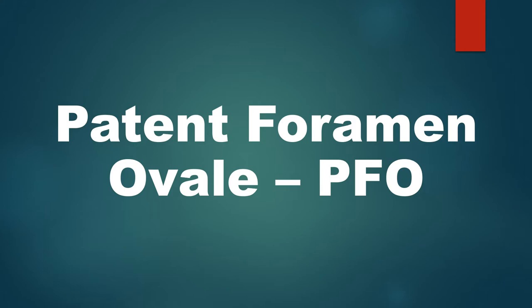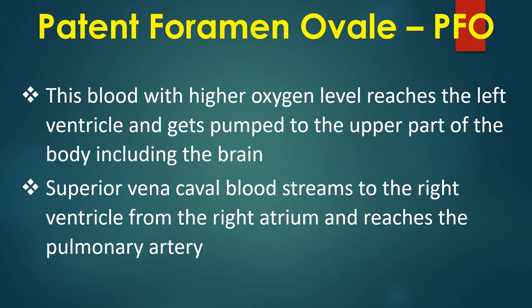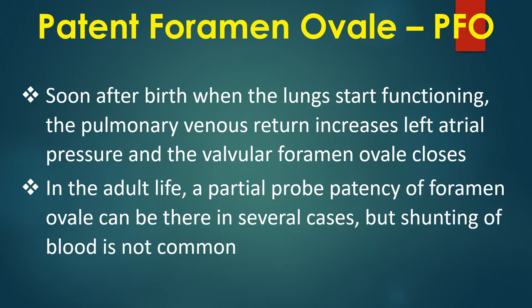Patent foramen ovale (PFO) is a valvular opening in the fossa ovalis region of the inter-atrial septum. In fetal life, the foramen ovale shunts relatively more saturated inferior vena caval blood — coming from the umbilical vein — from the right atrium to the left atrium. This blood with higher oxygen level reaches the left ventricle and is pumped to the upper part of the body including the brain. Superior vena caval blood streams to the right ventricle and reaches the pulmonary artery. As the lungs are non-functional, blood from the pulmonary artery is shunted to the descending thoracic aorta through the ductus arteriosus, reaching the umbilical artery and then the placenta for oxygenation. Soon after birth, when the lungs start functioning, increased pulmonary venous return elevates left atrial pressure and the valvular foramen ovale closes.